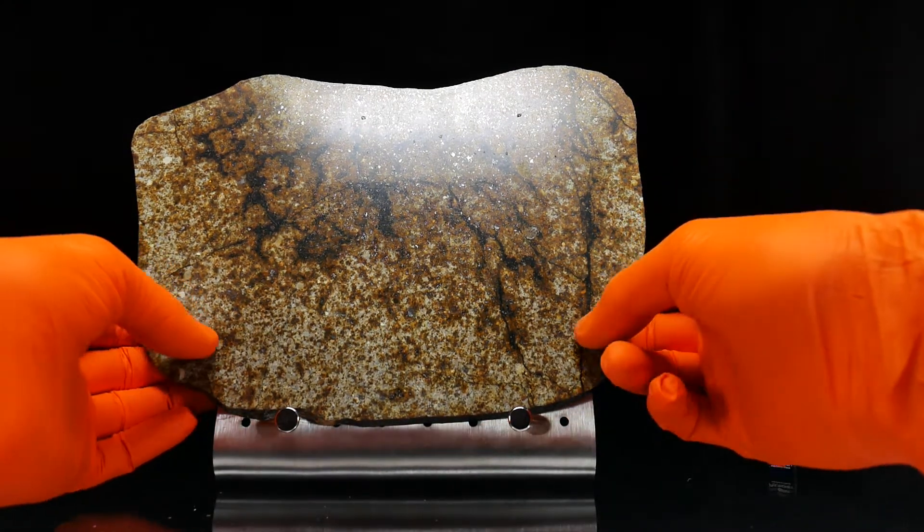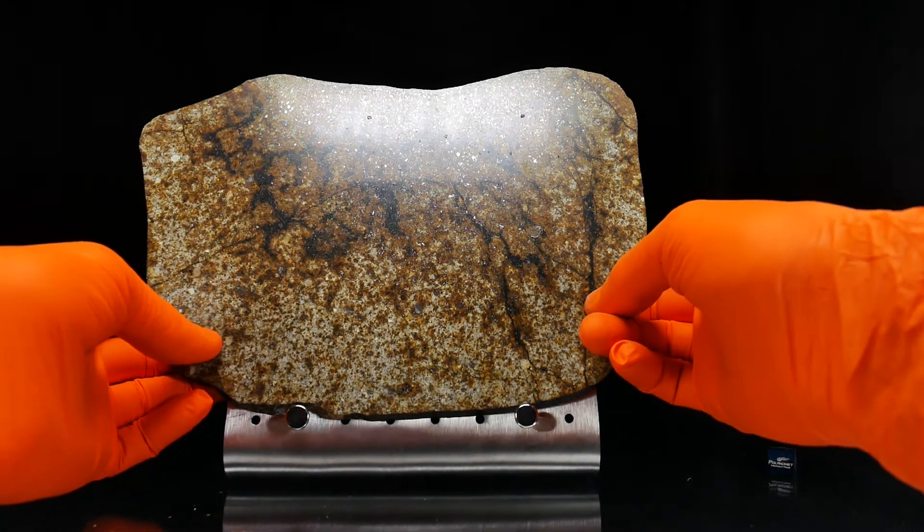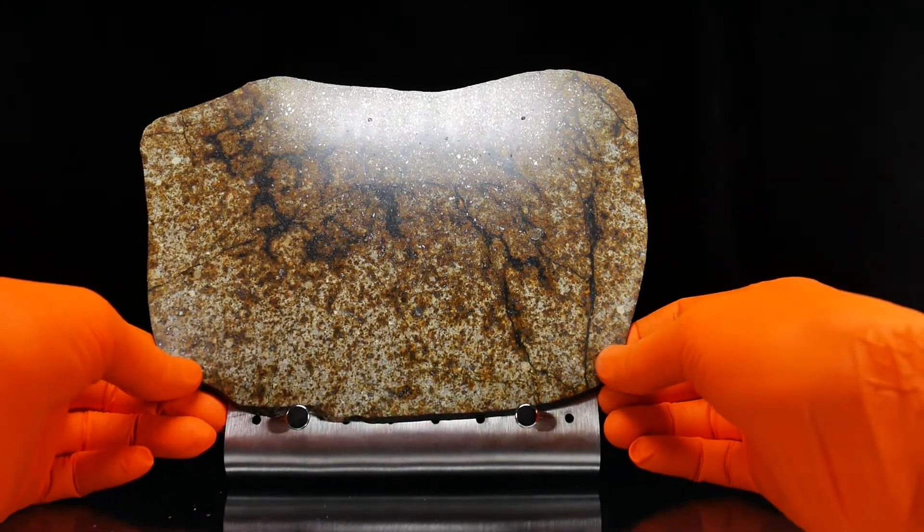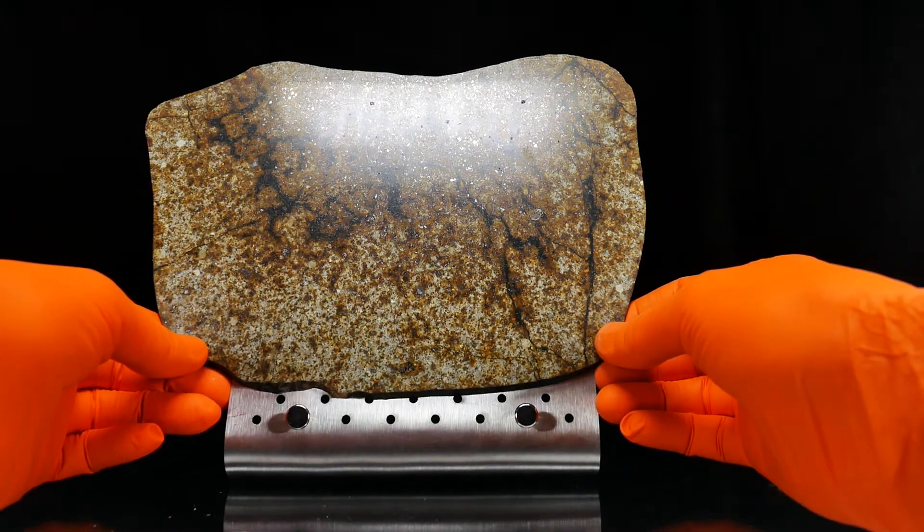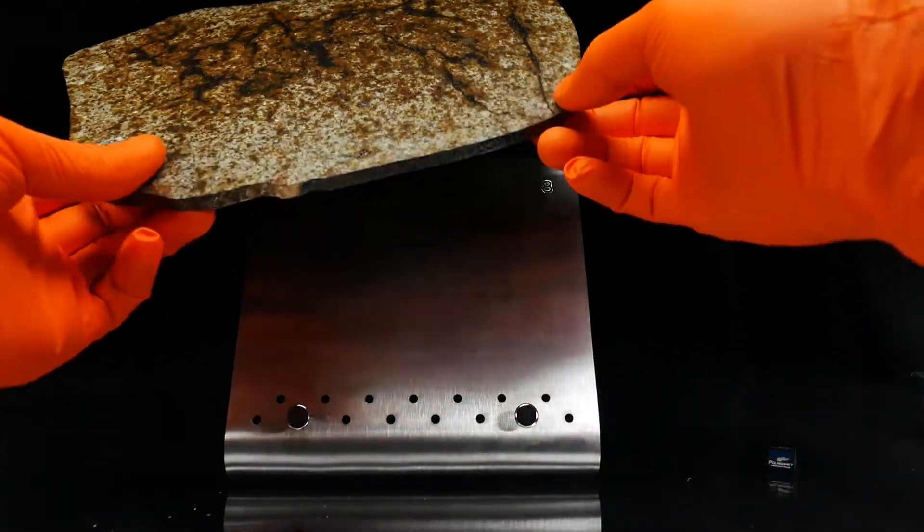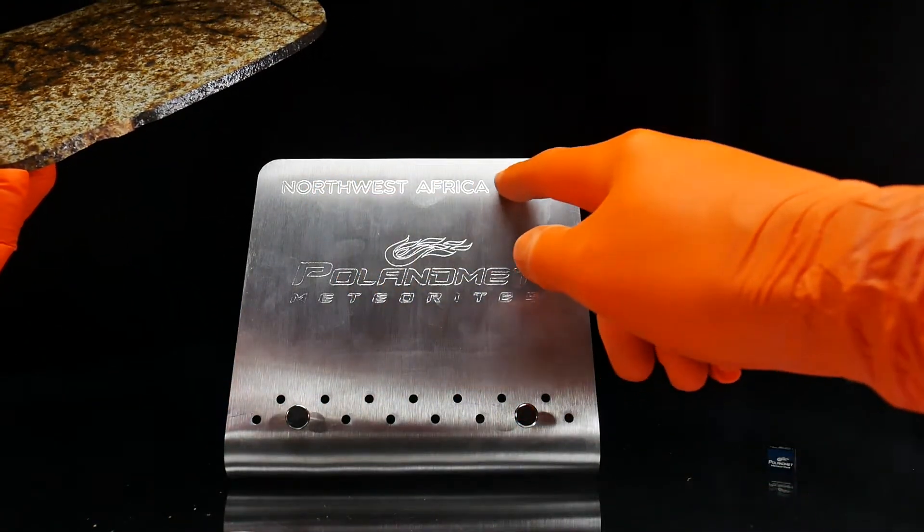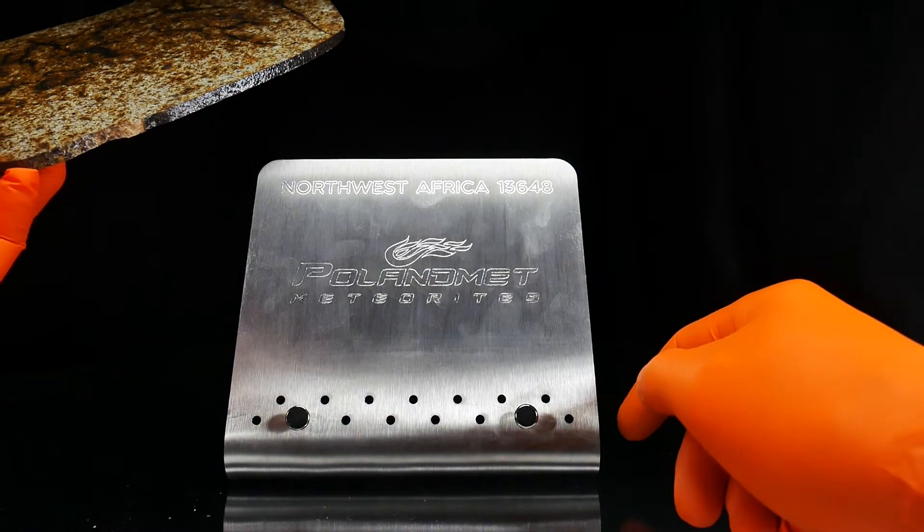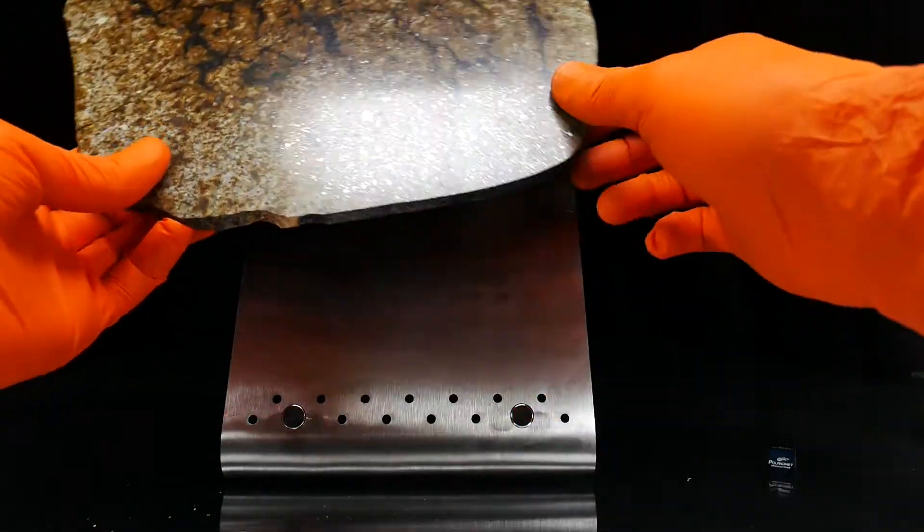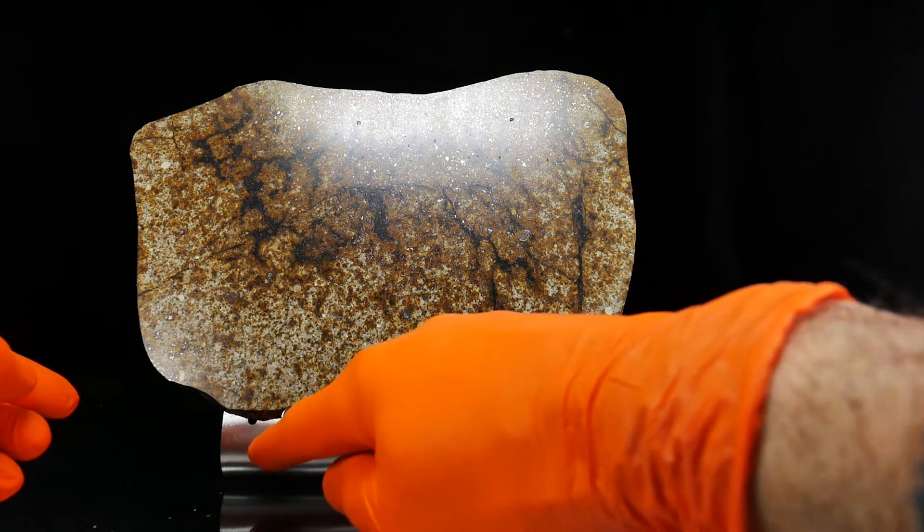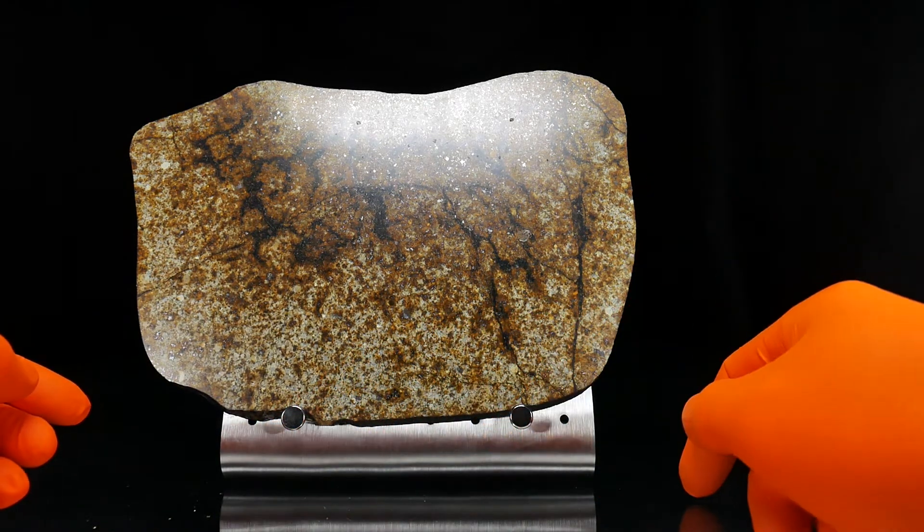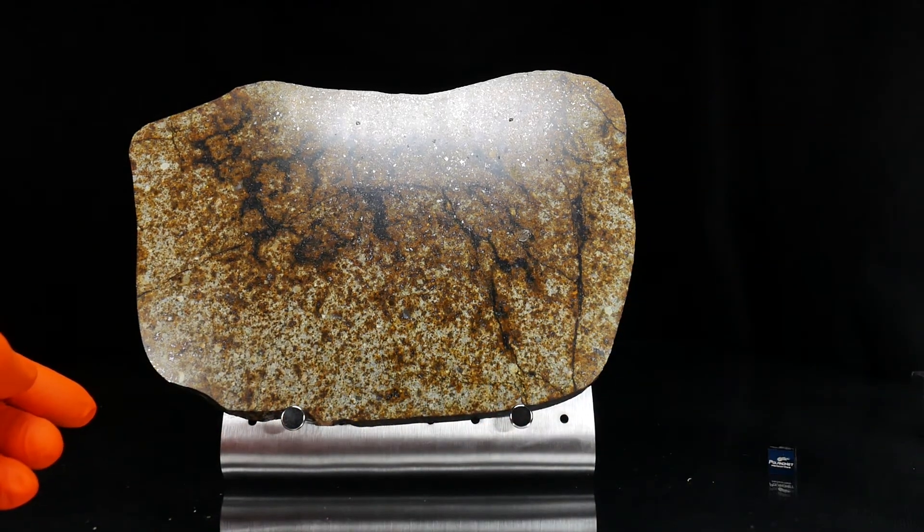Okay, so in the final version the slice will be a little bit higher, about one centimeter, and the Northwest Africa name of the meteorite will be under the slice. Thank you.